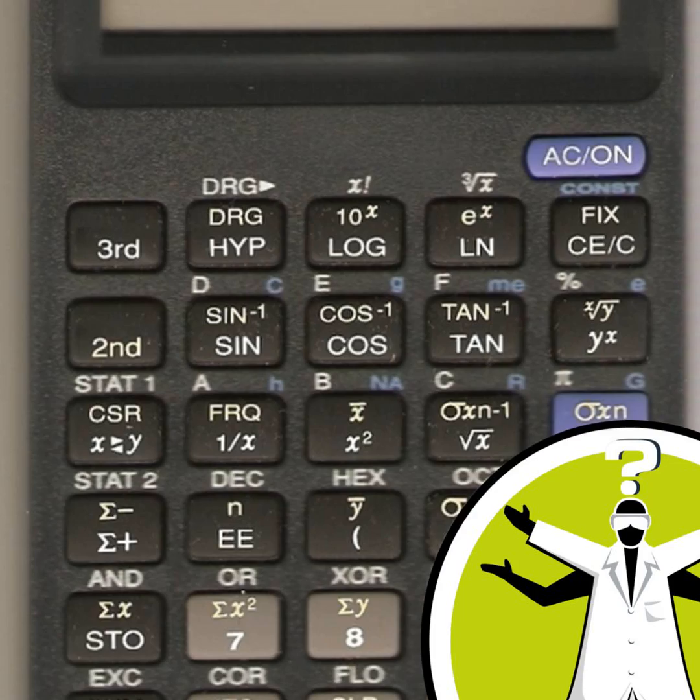Transistors use electricity to be in an on state indicated by a one and off indicated by a zero. So when the calculator wants to add two numbers, it first converts those numbers into binary.